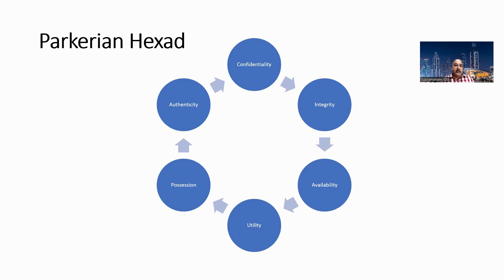Now, what is this Parkerian Hexad? We all know what confidentiality, integrity and availability is. Confidentiality is a principle by which we maintain data or information as secret. What information or data we maintain as secret depends upon the context of the organization.